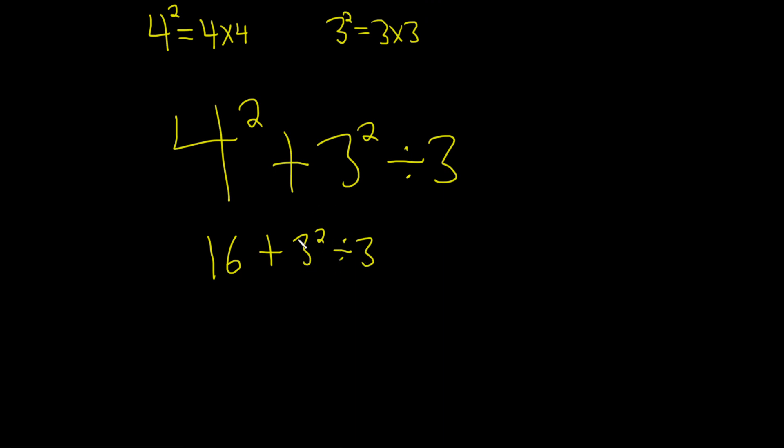Okay. Now we're going to do this one here. 3 squared. So I'll keep the 16. Keep the plus. So 3 squared is 9 because it's 3 times 3. Then I'll put my division here. Then I'll put my 3.